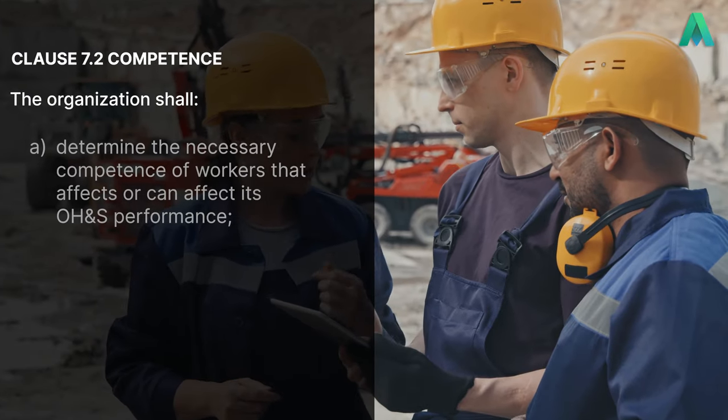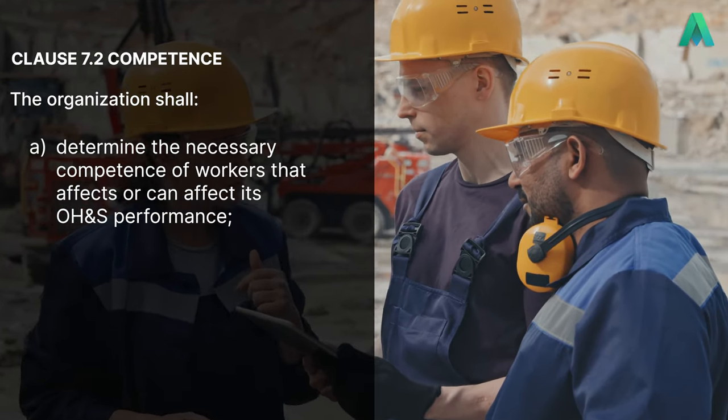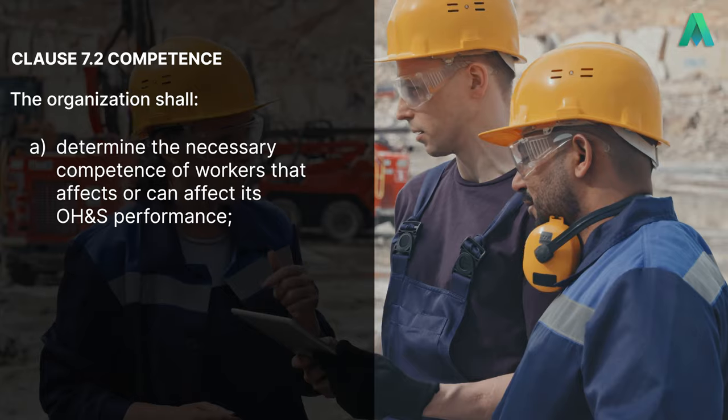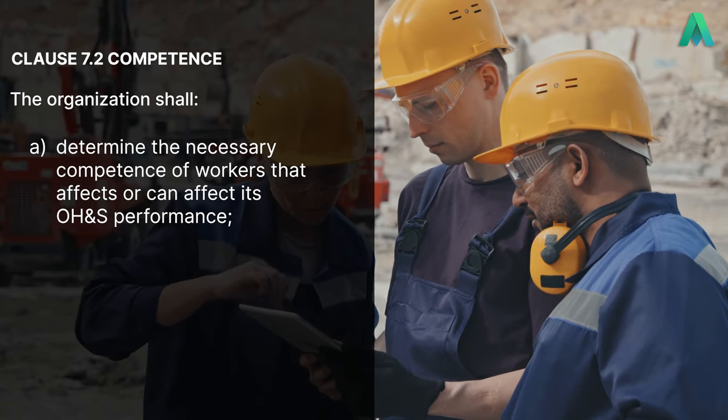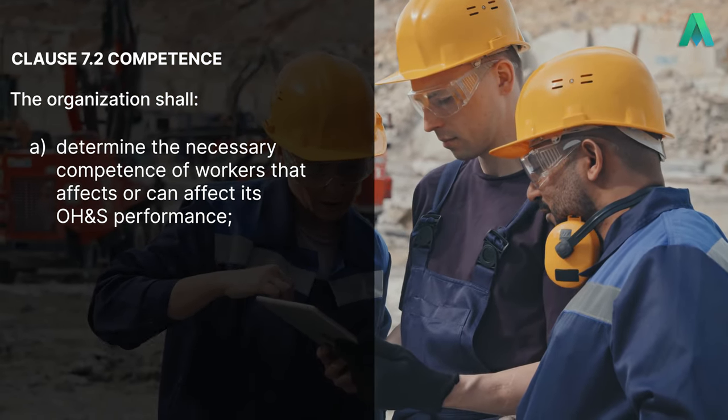Okay, let's get started. Let's take a look at what clause 7.2 wants us to do. First off, the clause states that the organisation shall A, determine the necessary competence of workers that affects or can affect its OH&S performance.